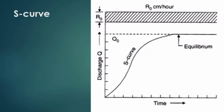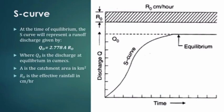We use one centimeter of effective rainfall of one hour duration applied for an indefinite period to generate the S hydrograph. The equilibrium value Q0 is the maximum discharge, given by the formula: Q0 = 2.778 × A × R0, where Q0 is the equilibrium discharge, R0 is the effective rainfall rate, and A is the catchment area in km².